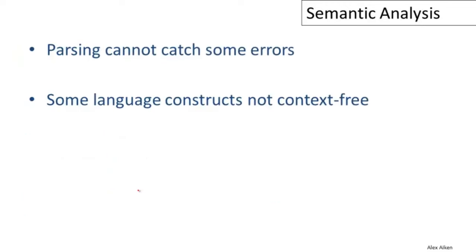Its job is to catch all potential remaining errors in a program. You might ask why we need a separate semantic analysis phase. The answer is simple: there are some features of programming languages — some kinds of mistakes — that parsing simply can't catch. Parsing using context-free grammars is not expressive enough to describe everything we're interested in.